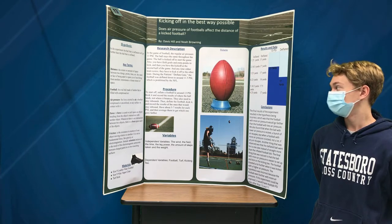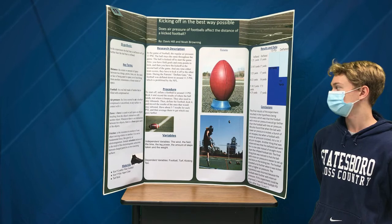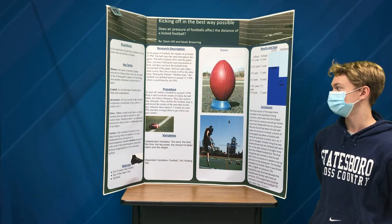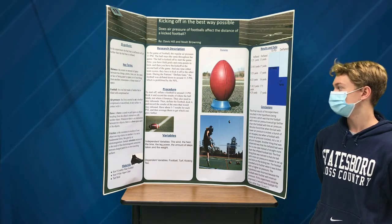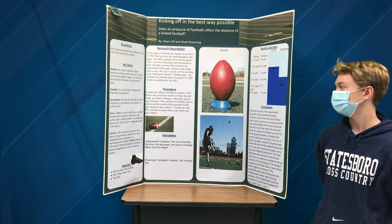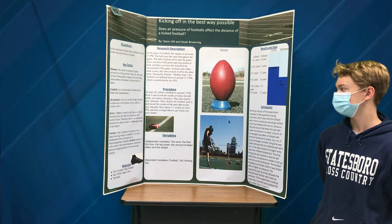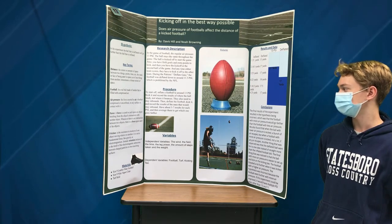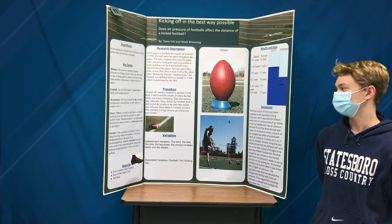To start off, inflate a football to around 13 PSI. Kick it and record the results of where the ball lands, not where it bounces. They also need to stay in balance. Then deflate the football, kick it, and record the results of the ones that stay in balance. Have about 5 to 7 results for each PSI, and then average them to get which one goes further.